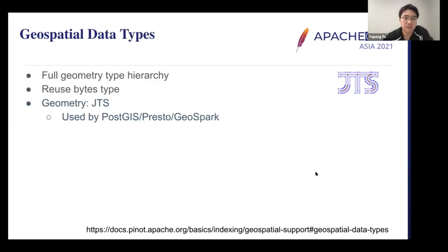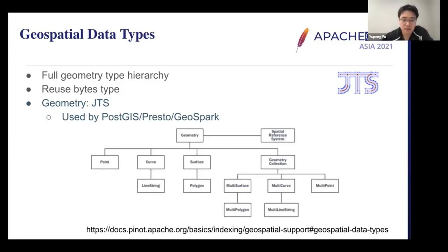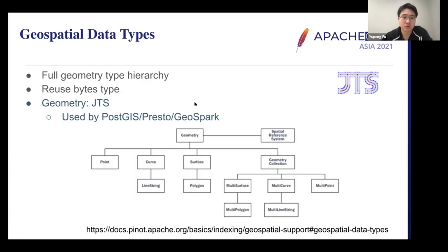For geospatial support, we added geospatial data types. Unlike the standard typing system in SQL, geospatial has a complex hierarchy — there are types like points, curves, and polygons. We add the geospatial types encoded as bytes in Pinot, with full support of the hierarchy. At the engine core, we reuse an open source library called GTS, which is also adopted by other frameworks like PostGIS and GeoSpark. To learn more about these geo types, you can look at the link to the Pinot open source documentation.